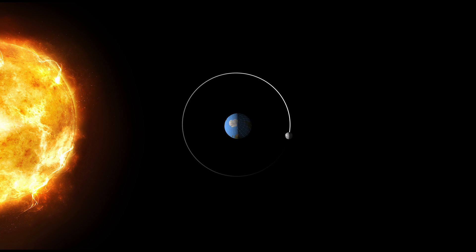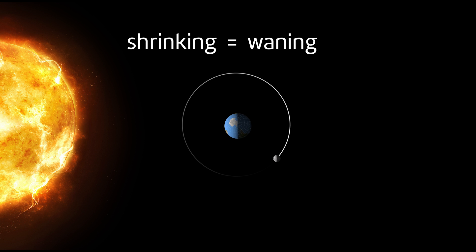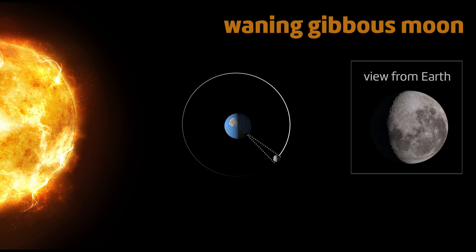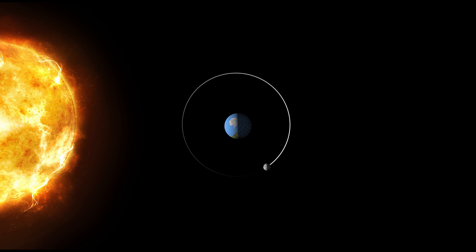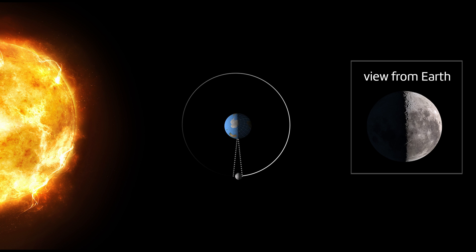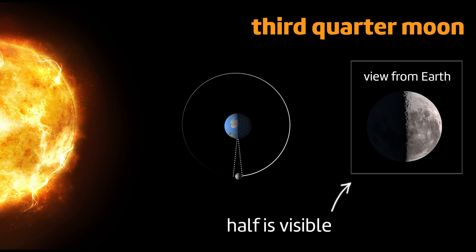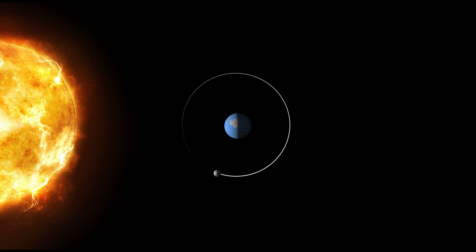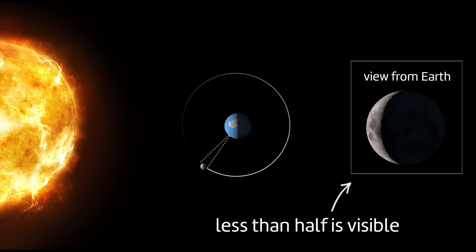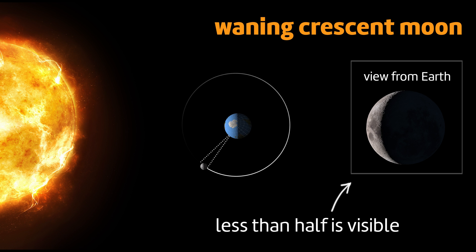On the second half of the Moon's journey, we see less and less of its bright side. We say that the Moon is waning. First, we see a waning gibbous Moon, where we can still see more than half of the bright side. When the Moon reaches three quarters of the way around the Earth, we again see half of the Moon lit up. This time, it's called the third quarter Moon. We then see less than half of the Moon, called a waning crescent Moon.